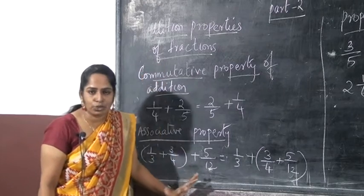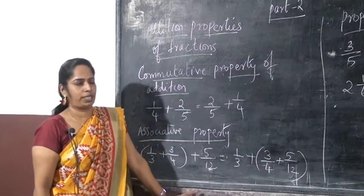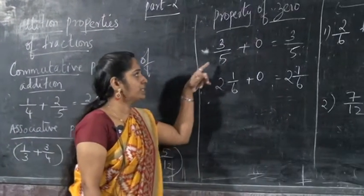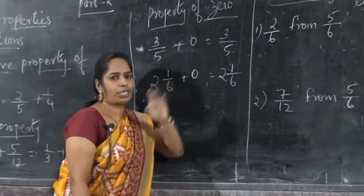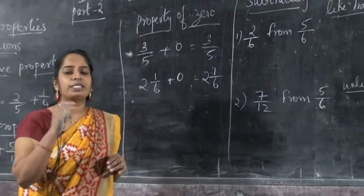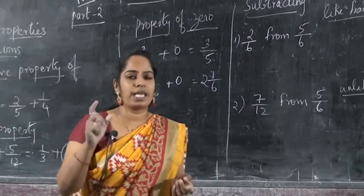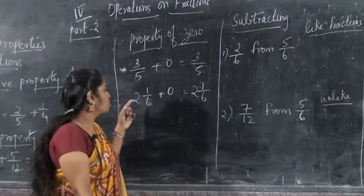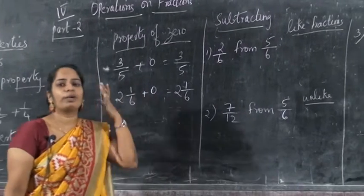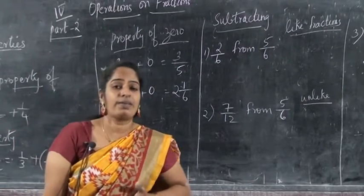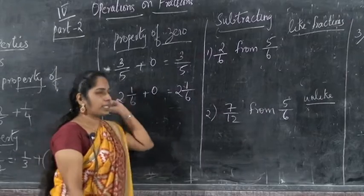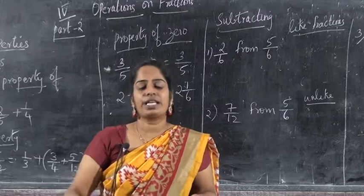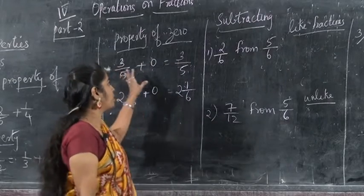Here there are two properties to study. You must study these two properties. Next is the property of zero. Property of zero means 3/5 plus zero is equal to 3/5. We all know that when a number is added to zero, the same number we are getting. So 3/5 plus zero is equal to 3/5 itself.